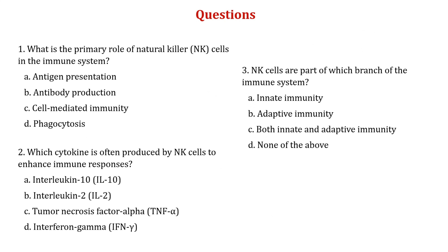Here are some MCQ-based questions. First: what is the primary role of natural killer cells in the immune system? Options: antigen presentation, antibody production, cell-mediated immunity, or phagocytosis. Second: which cytokine is associated with the immune response — interleukin-10, interleukin-2, tumor necrosis factor alpha, or interferon gamma? Third: NK cells are part of which branch of the immune system — innate, adaptive, or both? Please write your answers in the comment section, and thank you for watching.